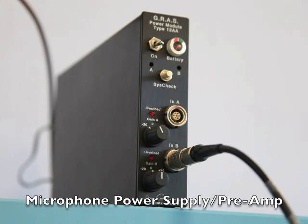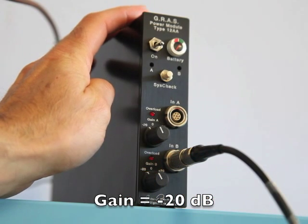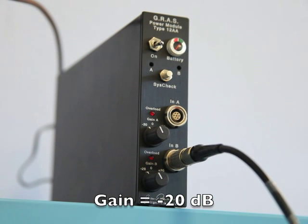And here's the microphone power supply and preamp, which has a variable gain setting. I'm going to set it to minus 20 dB because the sound pressure level in the tube is very high and we don't want to saturate the microphone.